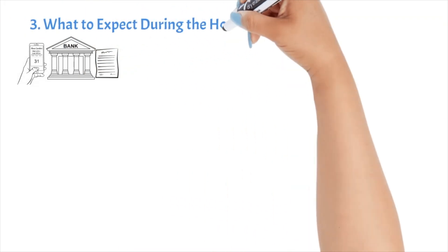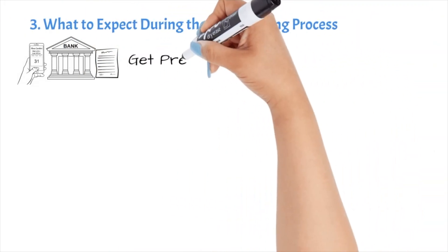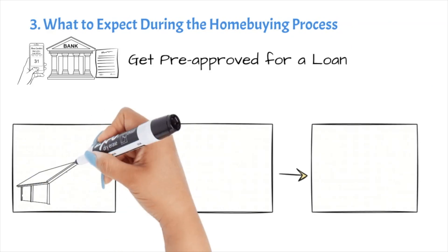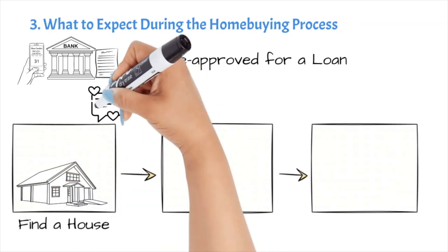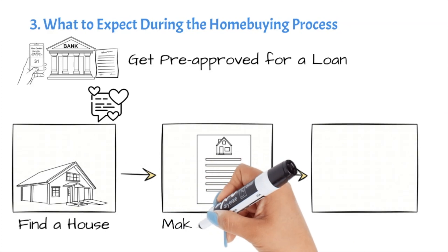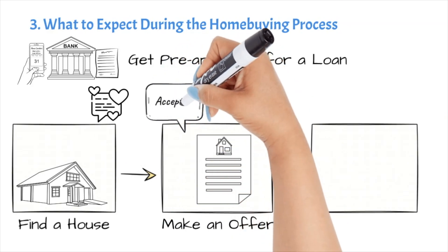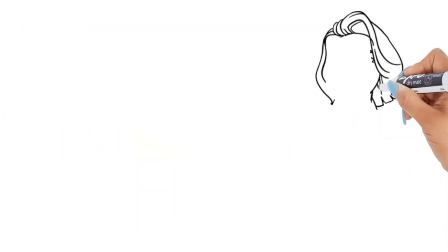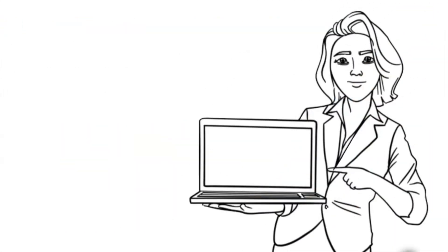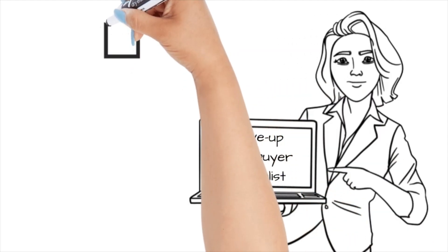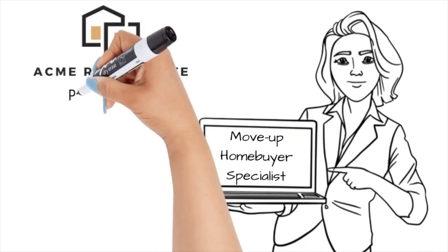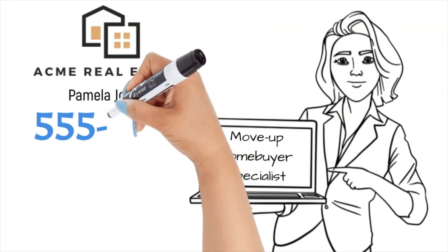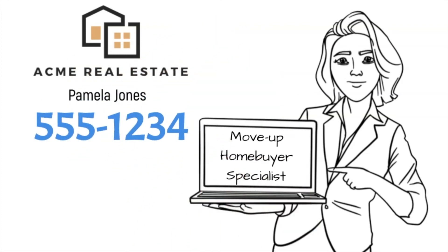Finally, you'll need to know what to expect during the home buying process. The first step is getting pre-approved for a loan, followed by finding a home that you want to buy. Once you've found a home, you'll need to make an offer and negotiate with the seller. If your offer is accepted, then you'll go through the escrow process. As one of the most experienced real estate agents in Los Angeles, I can help you through every step of both the selling and home buying process. If you're ready to move up to your next home, then please give me a call at 555-1234. And there you have it — how you can make two similar videos for different audiences.